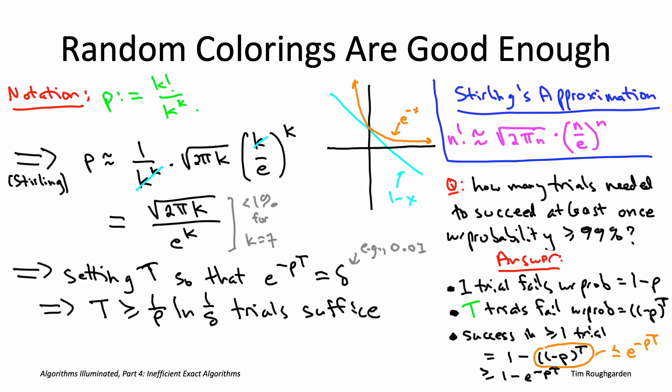So for example, if our success probability of one trial, p, was like 1%, that 1 over p term would turn into a factor of 100. And if we set delta to be 0.01, meaning we want a 99% success rate, then that's going to multiply the 100 by something like 5. So it's going to tell you that take 500 trials and you're good to go. You should succeed almost all the time on at least one of them.